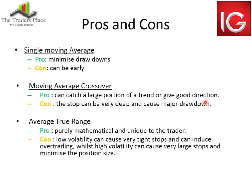Average true range — the upside is it's purely mathematical and unique to you. It's highly unlikely there are going to be 50 other traders with exactly the same stop loss value. When it comes to support as a stop loss, you get a lot of orders building up at that level, which can give you a false stop. If your ATR is beyond that support level, it is generally unique. The downside is low volatility can cause tight stops and induce overtrading, while high volatility can cause very large stops and minimize position size.